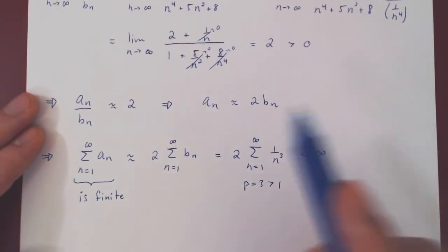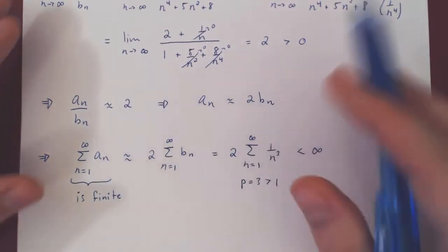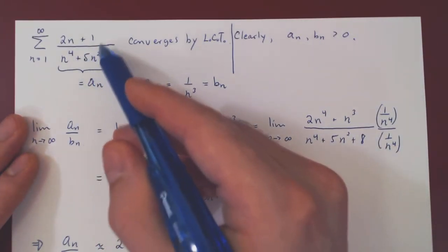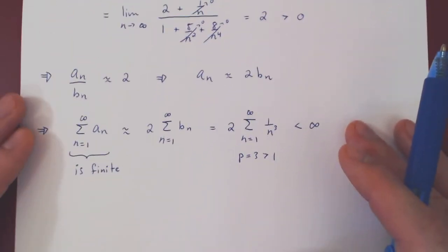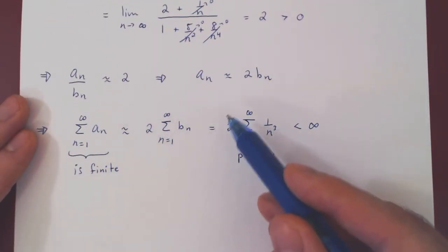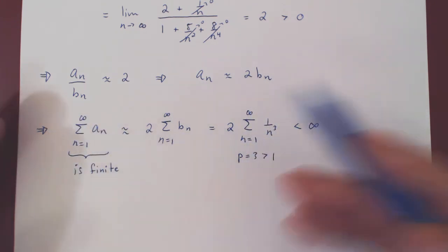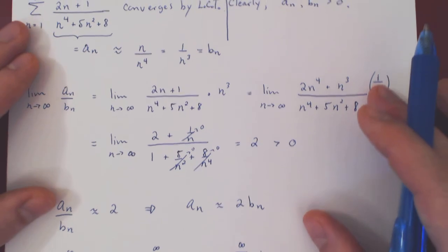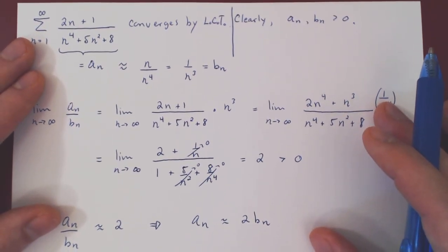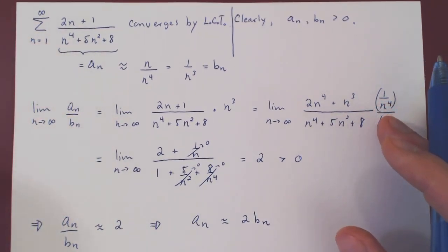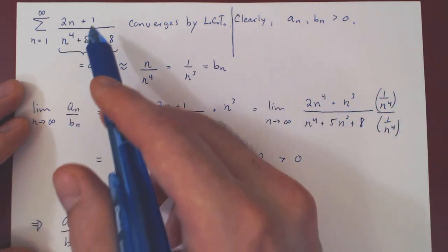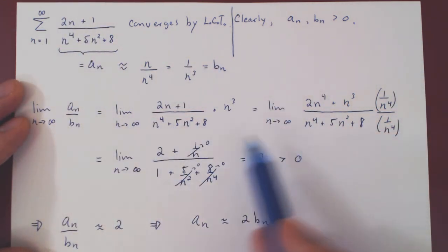So your intuition was correct. And so the initial series, even though it may look intimidating, is essentially nothing but roughly twice a convergent P series, therefore converges as well. And that is hopefully why, or at least hopefully demonstrates, that the limit comparison test is very elegant, as you do not have to struggle with inequalities.